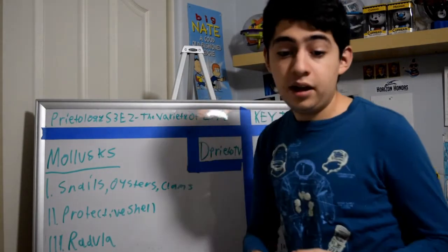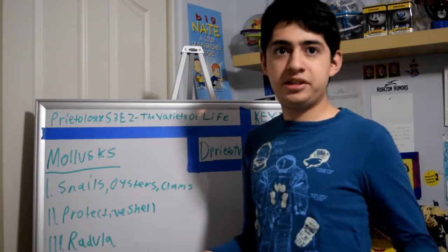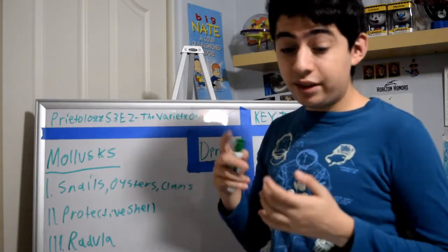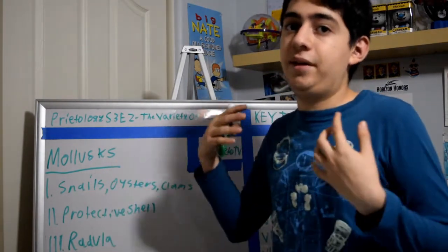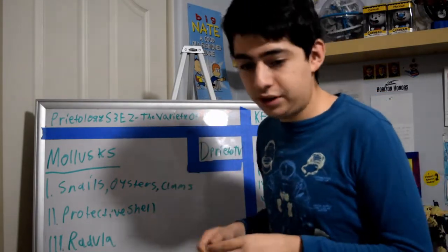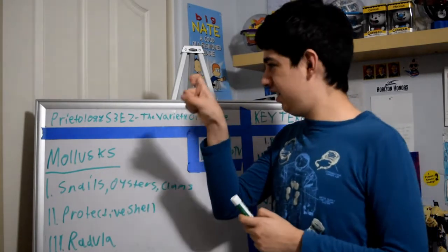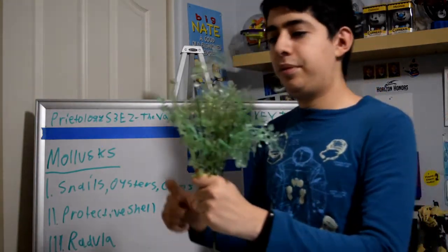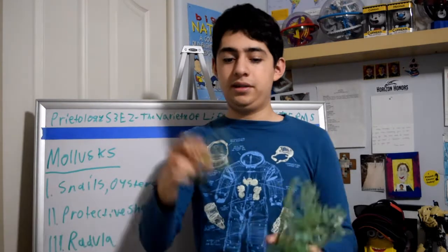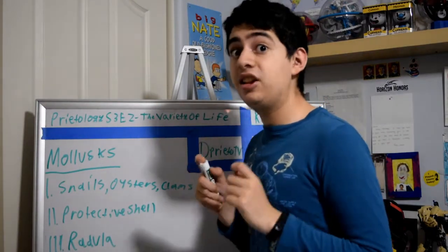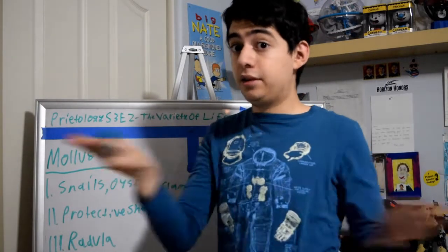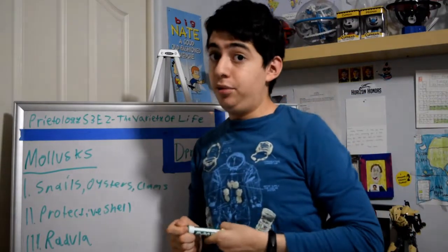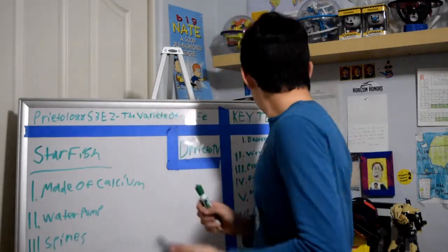Term 13: mollusks. Mollusks are pretty interesting animals. They include snails, oysters, clams, mussels, octopuses, and squids. Most of them carry a protective shell — like a snail or clam — for protection. They collect food with a sharp, jagged part of their body called a Radula. Fun fact: the deadliest mollusk is called the blue-ringed octopus. If you have never seen it before, do not touch it — it is deadly. Please do not touch this animal.